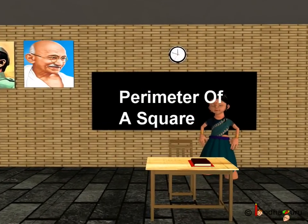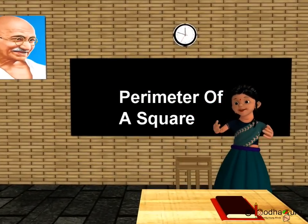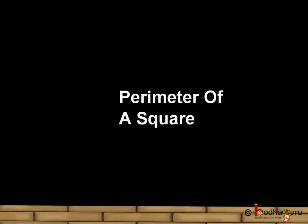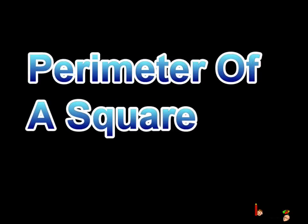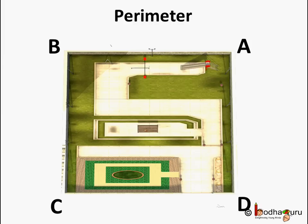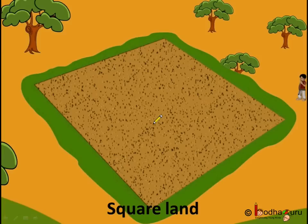Good morning children. Now we shall learn about the perimeter of a figure. So what is a perimeter? Let us understand it first. The total distance around a figure is called the perimeter of that figure. Now this is the piece of land which Mahanath Ram bought.